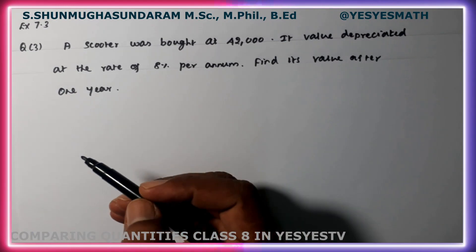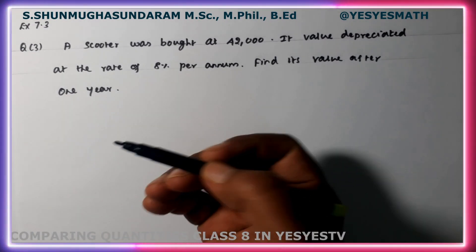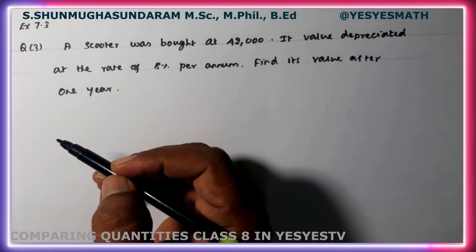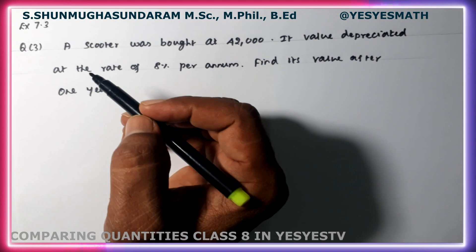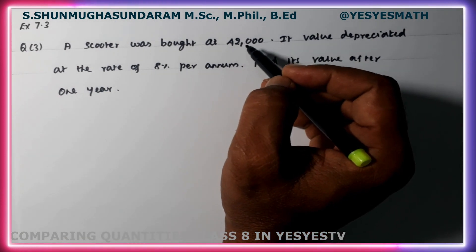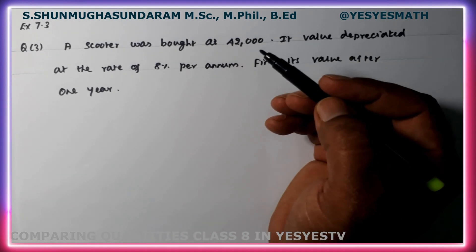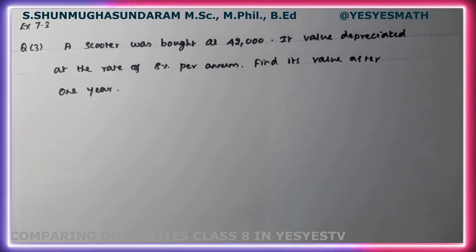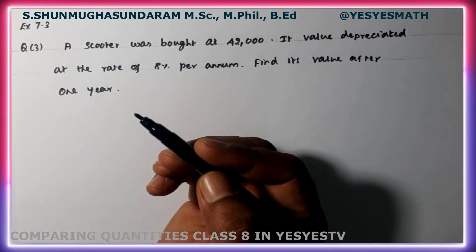CBC Class 8, Exercise 7.3, Question Number 3, Comparing Quantities, Chapter 7, New Syllabus 2023-2024. A scooter was bought at Rs. 42,000. Its value depreciated — meaning the value decreased — at the rate of 8% per annum.